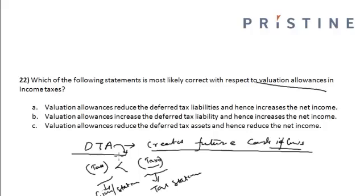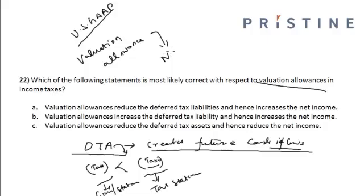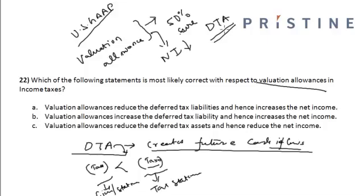Under US GAAP, if it is highly probable that the company may not be able to recover its deferred tax asset, then the valuation allowance is allowed under income tax. The valuation allowance reduces net income, and it is used only when the company is more than 50% sure that deferred tax assets cannot be utilized in the future.